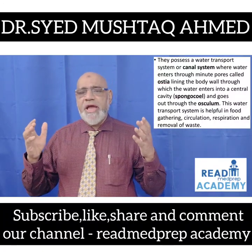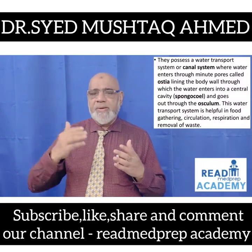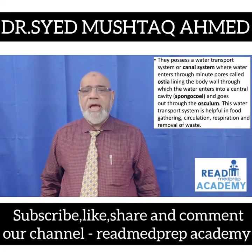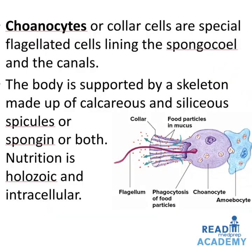Water enters through small minute pores called the ostia lining the body wall into a central cavity called the spongocoel, and goes out through the osculum. This water transport system is helpful in food gathering, circulation, respiration, and removal of waste. In this image you can see the entry of water through the dermal ostia, the choanoderm consisting of choanocytes, mesenchyme, the pinacoderm, spongocoel, and the osculum. Choanocytes or collar cells are special flagellated cells lining the spongocoel and the canals.